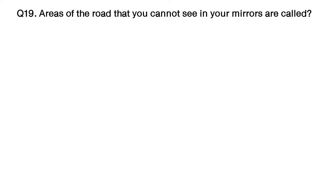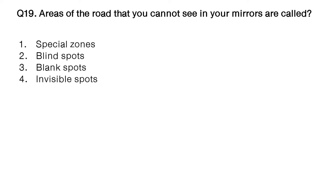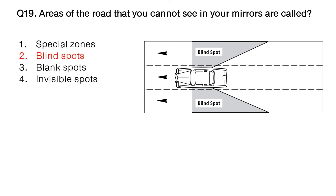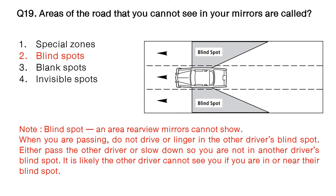Question: areas of the road that you cannot see in your mirrors are called? Option number 1: special zones. Option number 2: blind spots. Option number 3: blank spots. Option number 4: invisible spots. The answer is option number 2: blind spots. Note: a blind spot is an area rear view mirrors cannot show. When you are passing, do not drive or linger in the other driver's blind spot. Either pass the other driver, or slow down so you are not in another driver's blind spot. It is likely the other driver cannot see you if you are in or near their blind spot.